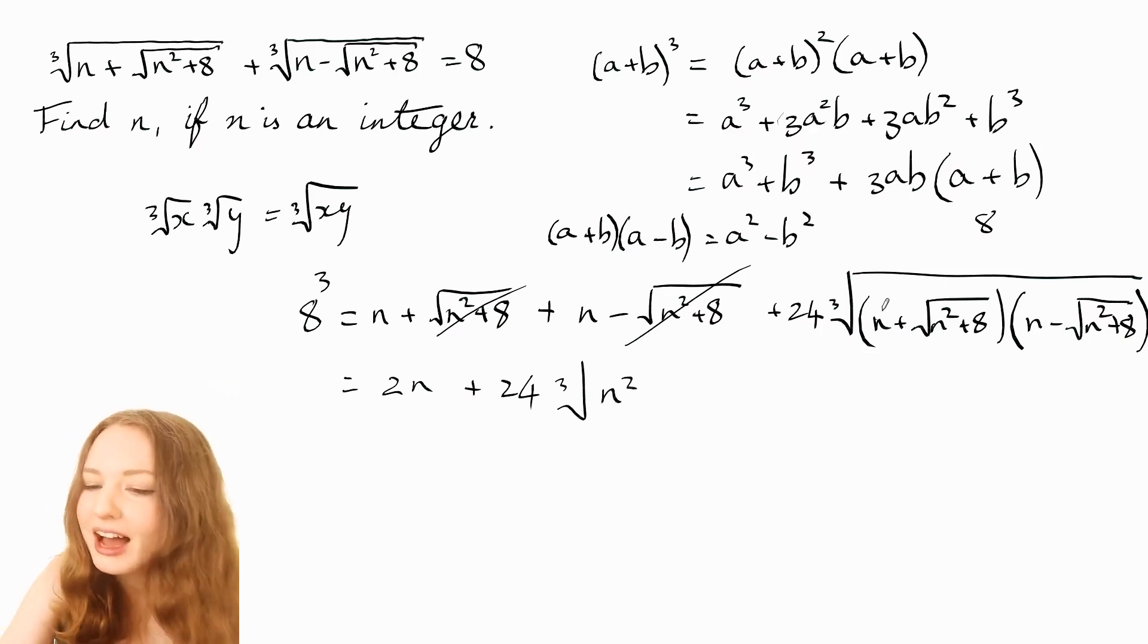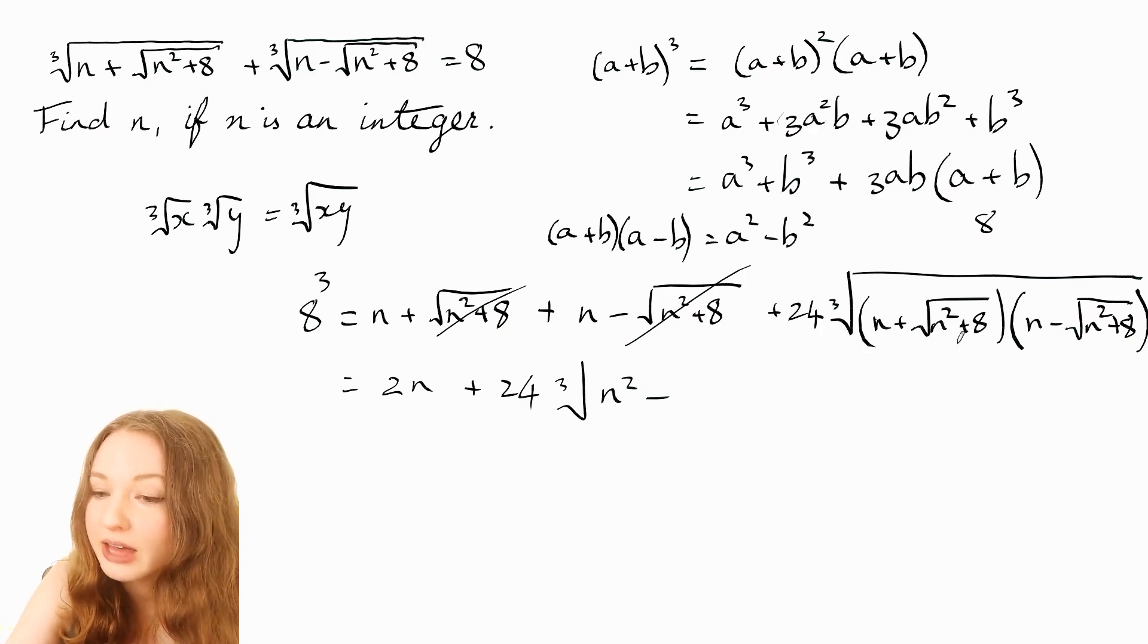So we will get cube root of, so that times that or sorry not a, n² and then minus that squared so that's just going to kill the square root so you can get -n² + 8.